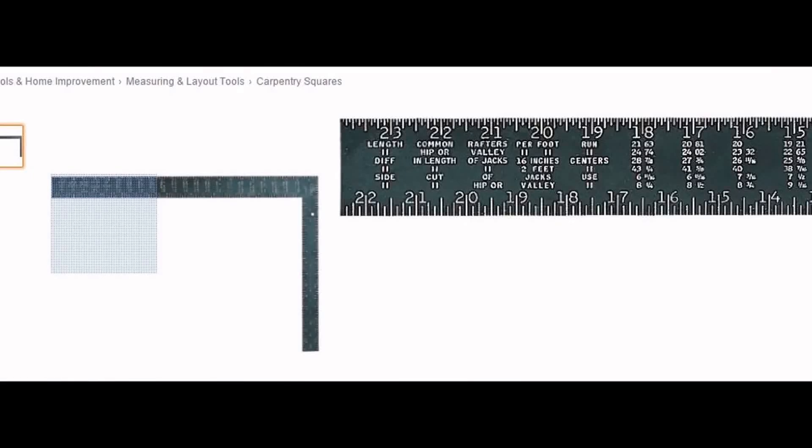Welcome to the first of a three-part video series on the framing square rafter tables. In this video, we'll look at lines 1 and 2 that correspond to the length of both common and hip and valley rafters per foot of run. My name is Ben O'Gorick and I'll be your host through this process.